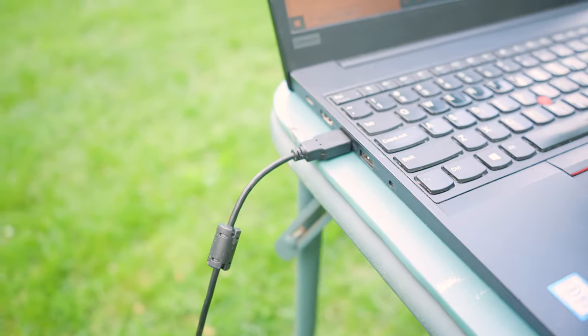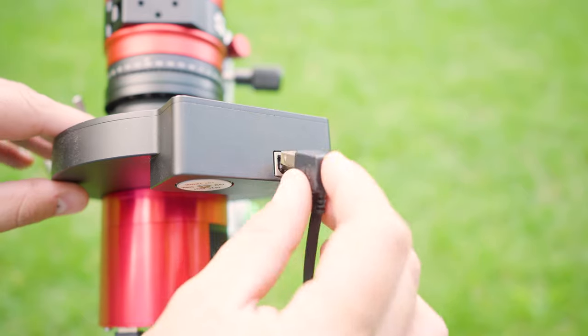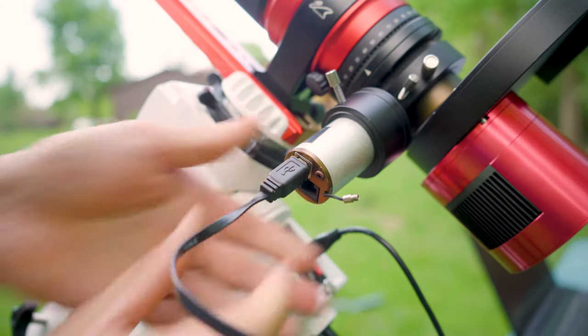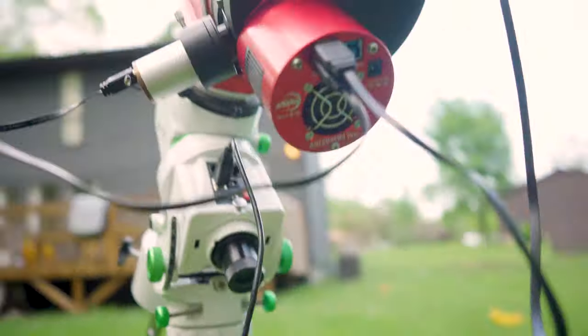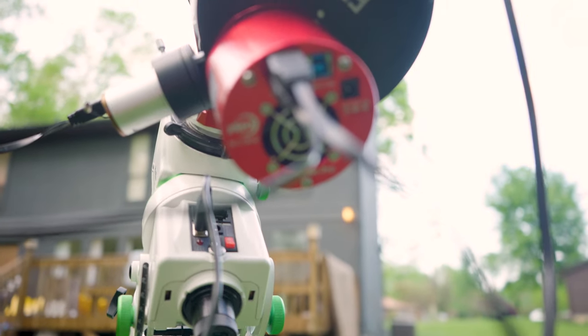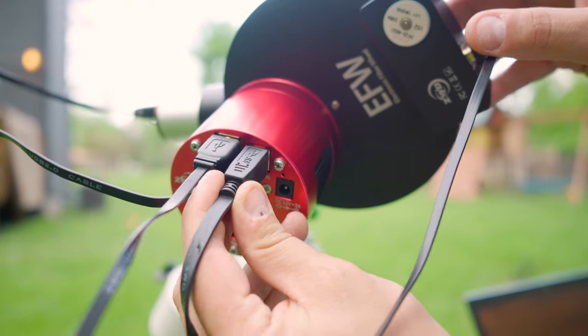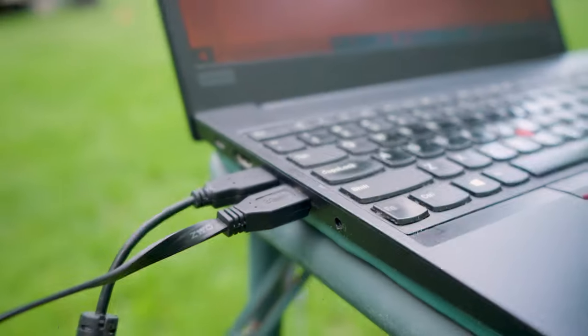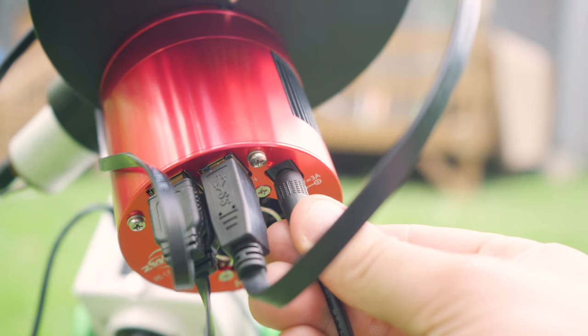I have my mount attached to my laptop via USB direct connection from the USB port on the mount. I have my filter wheel and my guide camera attached to the USB hub on the back of the 294 monochrome camera which is connected directly to my laptop via USB 3.0. Both my camera and mount are being powered by AC adapters from Apertura.